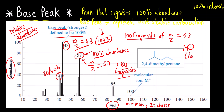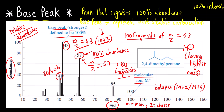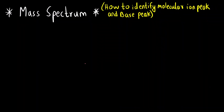How can we identify the molecular ion peak M⁺? It is the one having the highest mass, because after the molecular ion is formed, fragmentation occurs — a molecule cannot have a mass greater than its molecular weight. Only in the case of isotopes would it show m+2 or m+4, which we will see later. In most cases, the last peak in the spectrum from left to right is the molecular ion peak.